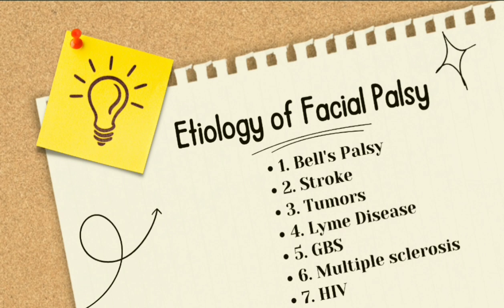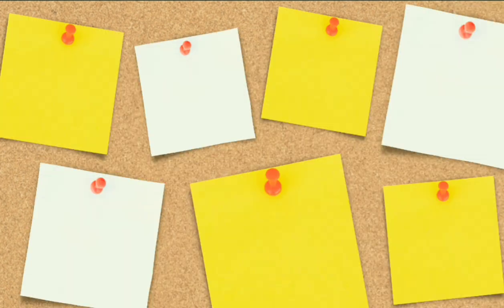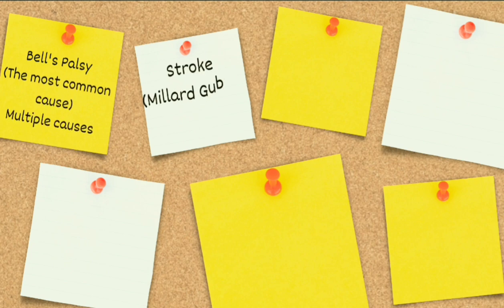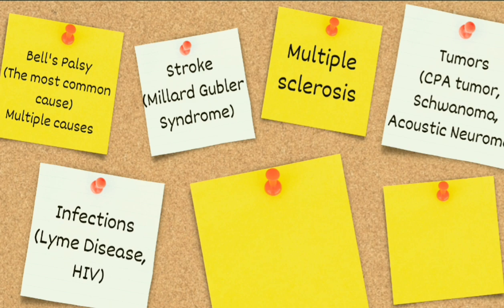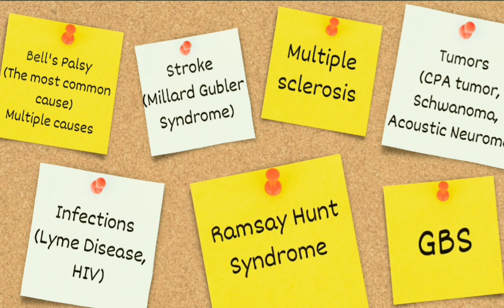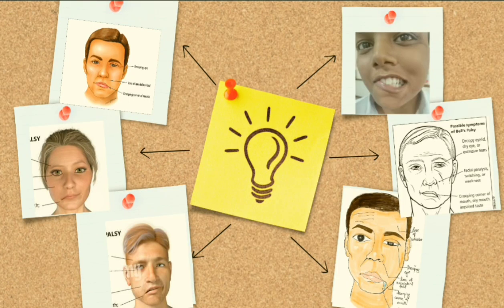Coming towards the etiology of facial palsy: the most common cause of lower motor neuron type is Bell's palsy, and the most common cause of upper motor neuron type is stroke. Other causes include tumors, Lyme disease, Guillain-Barré syndrome, multiple sclerosis, and HIV. Systemic conditions associated with facial palsy include diabetes, hypertension, sarcoidosis, and vasculitis. Bell's palsy itself has multiple causes; stroke may present as Millard-Gubler syndrome; tumors include CP angle tumors, vestibular schwannomas, and acoustic neuromas; infections include Lyme disease, HIV, and Ramsay Hunt syndrome.